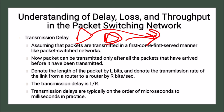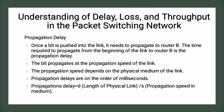The next is propagation delay. Once a bit is pushed into the link, it needs to propagate to router B. The time required to propagate from the beginning of the link to router B is the propagation delay. The propagation speed depends on the physical medium of the link. Propagation delay equals the length of the physical link divided by the propagation speed in the medium, so it is D/S.